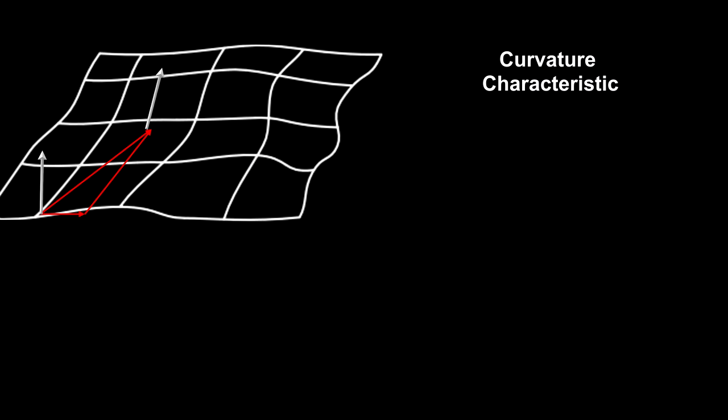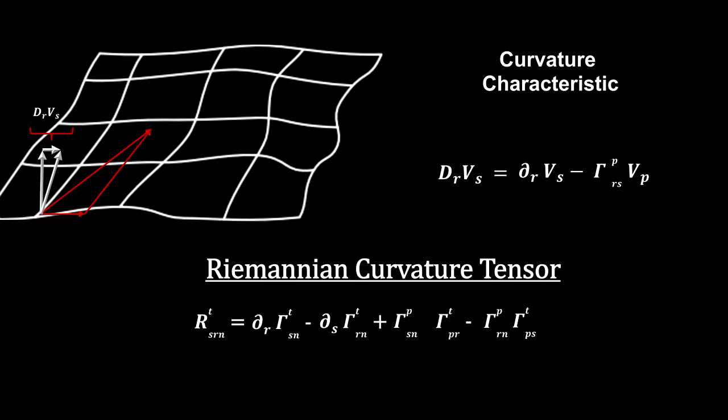Riemann developed the tensor that precisely measures how much the components of a vector change when it is parallel transported along a small closed curve. This is called the Riemannian curvature tensor.